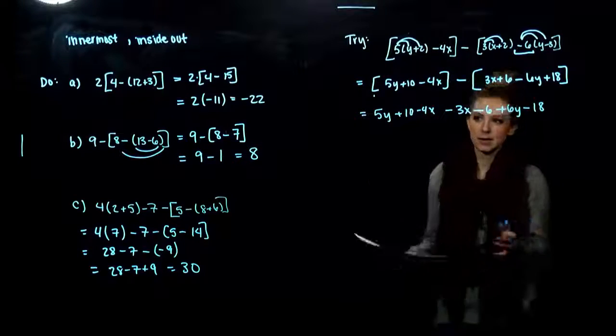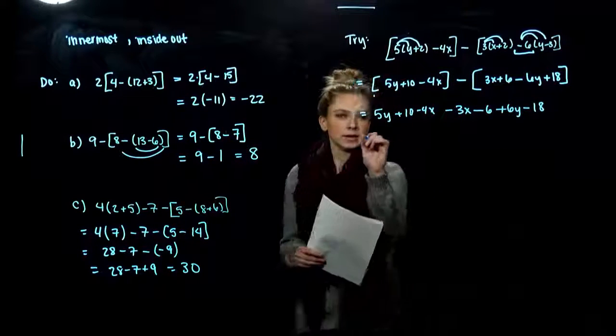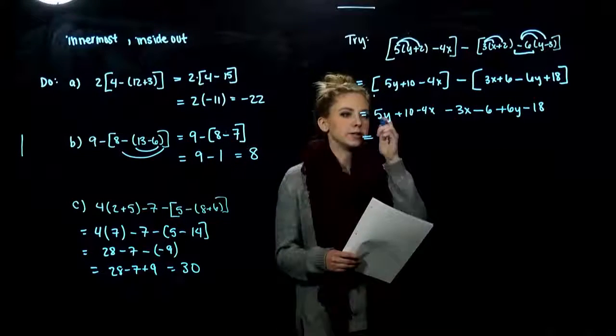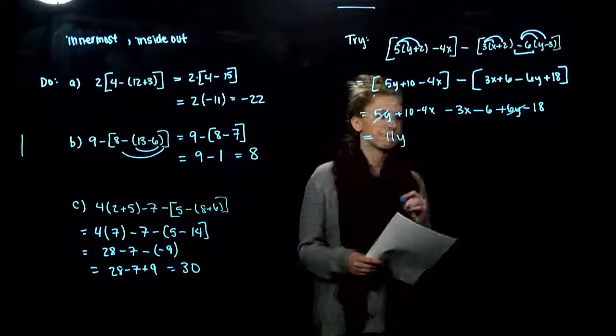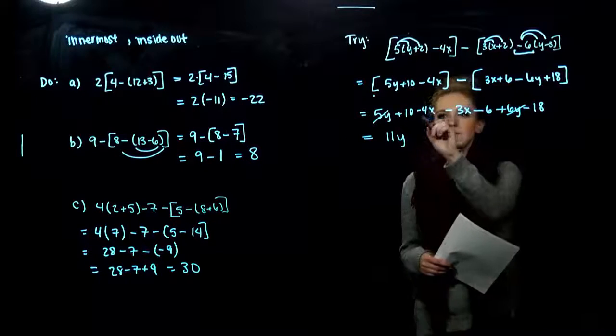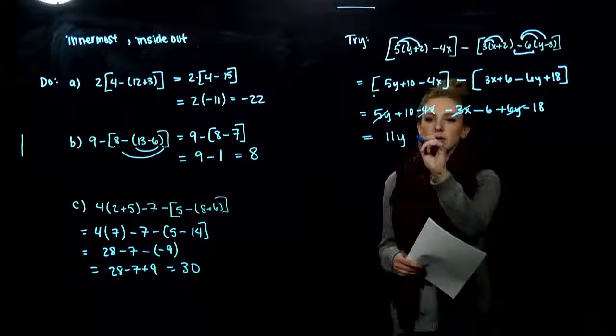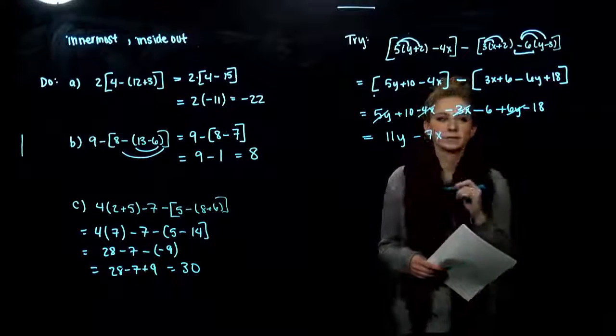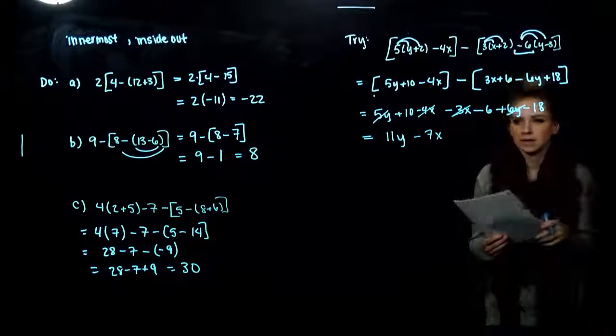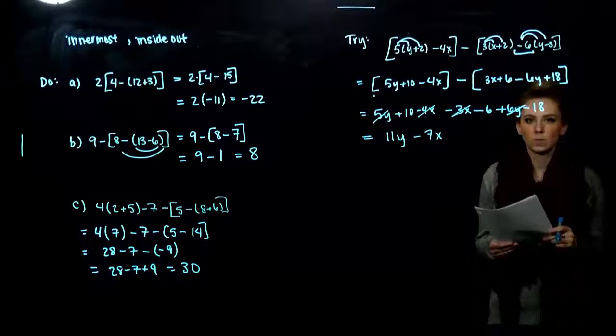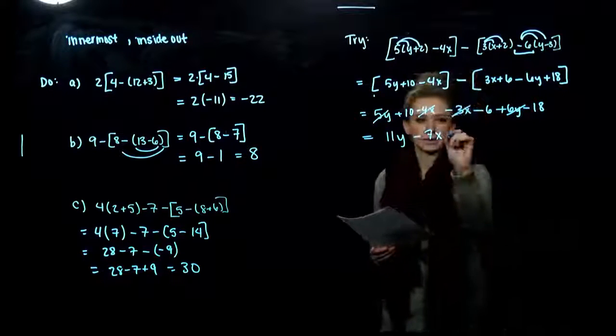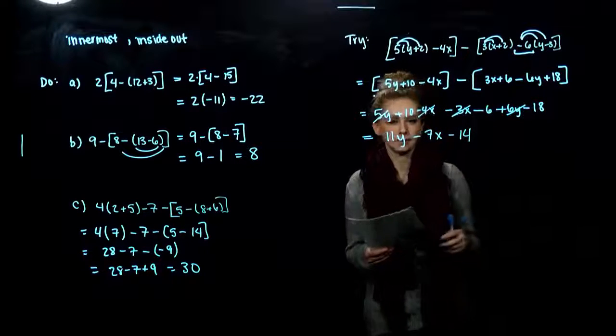So now we can combine our like terms together. How many factors of y do I have? I've got 5 and 6 will give me 11. I have negative 4x and negative 3x, so I have minus 7x. And 10 minus 6 will give us 4. 4 minus 18 will give us minus 14.